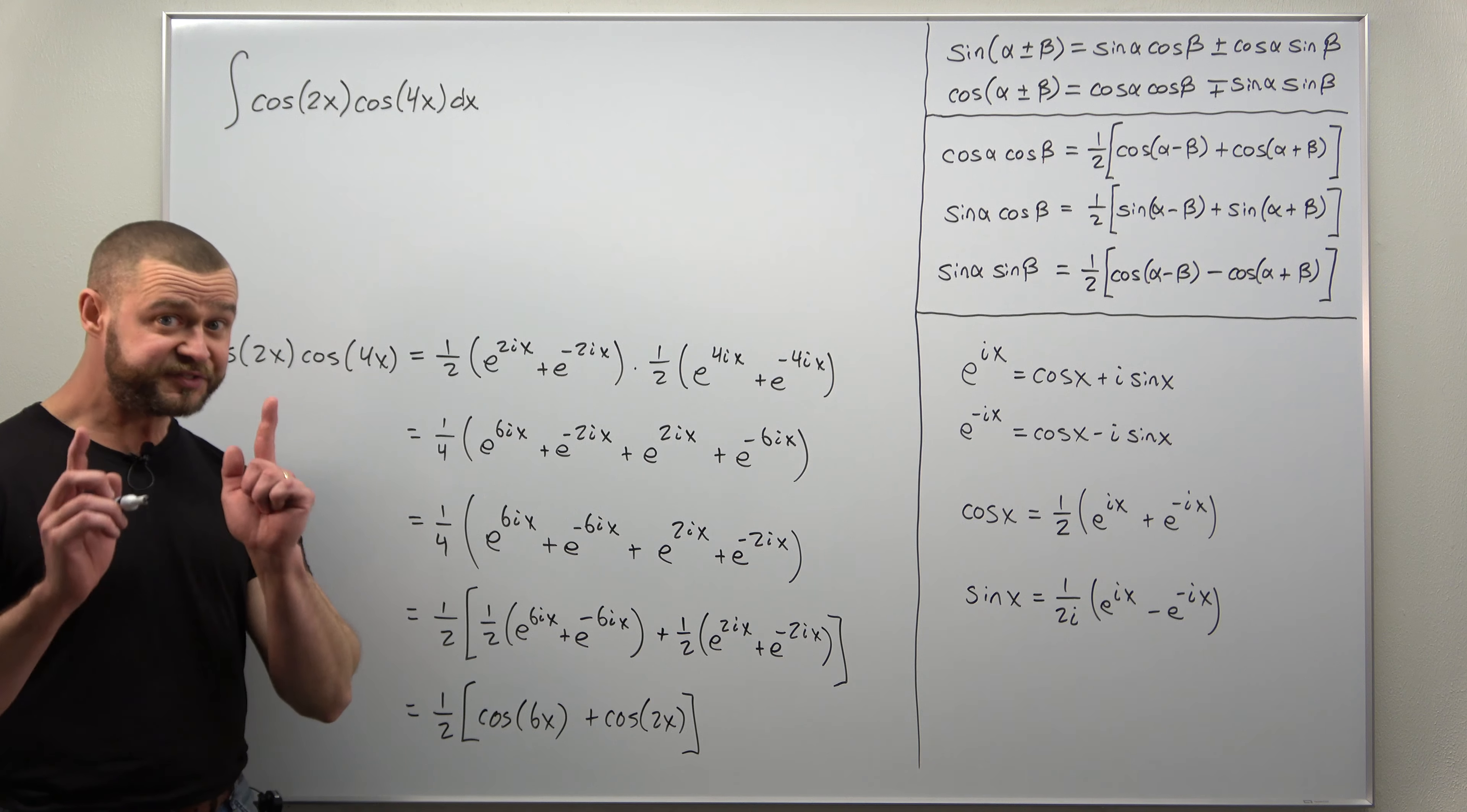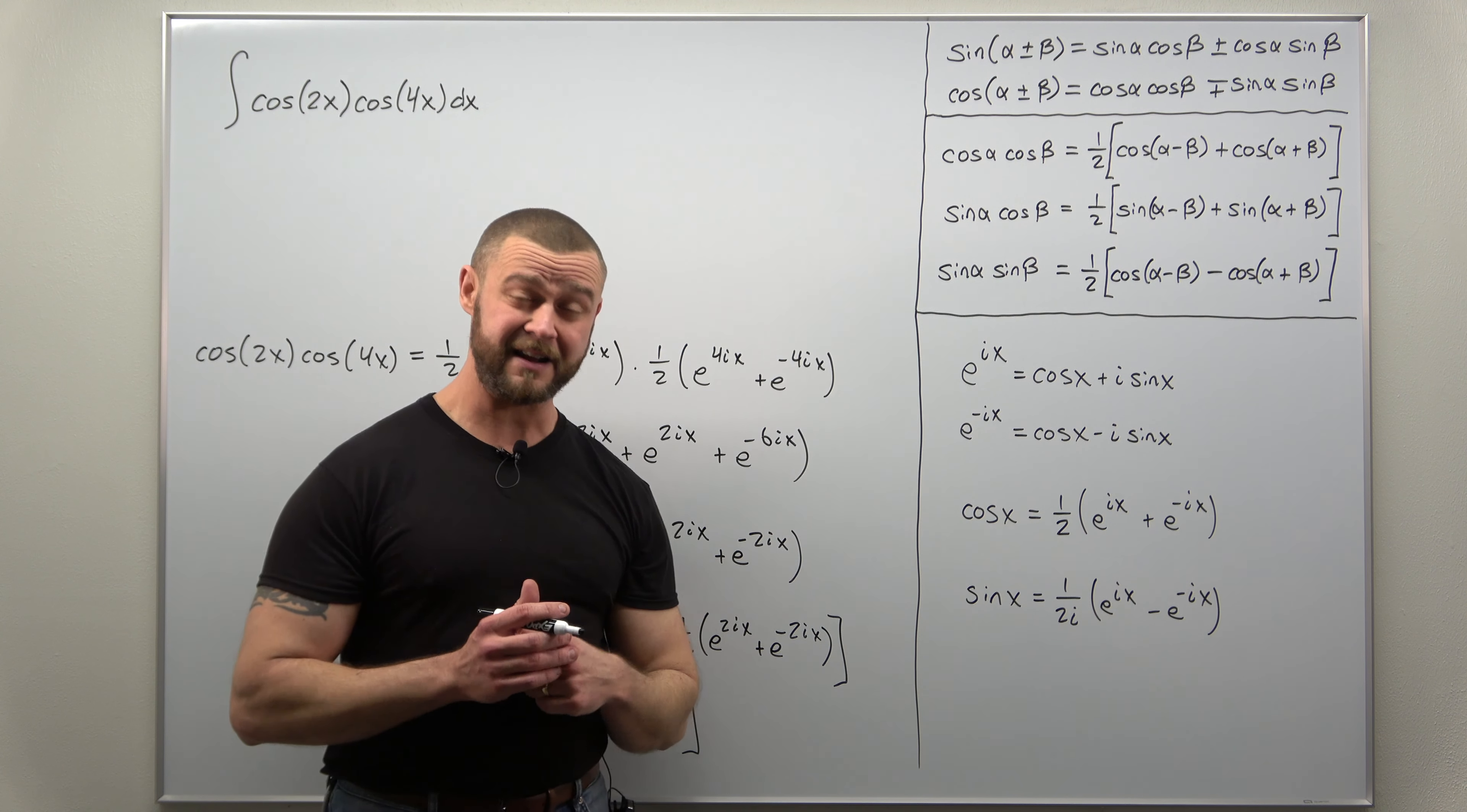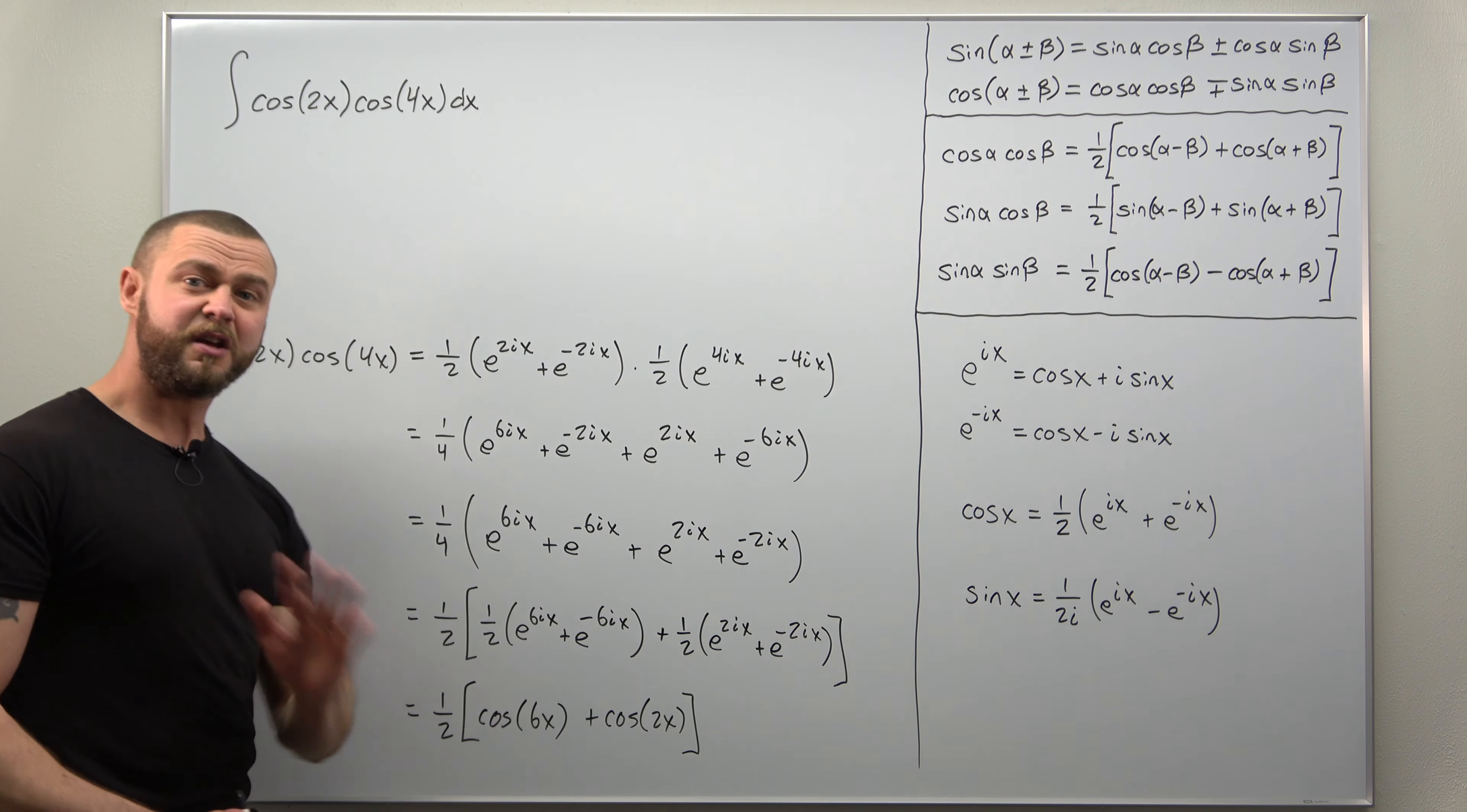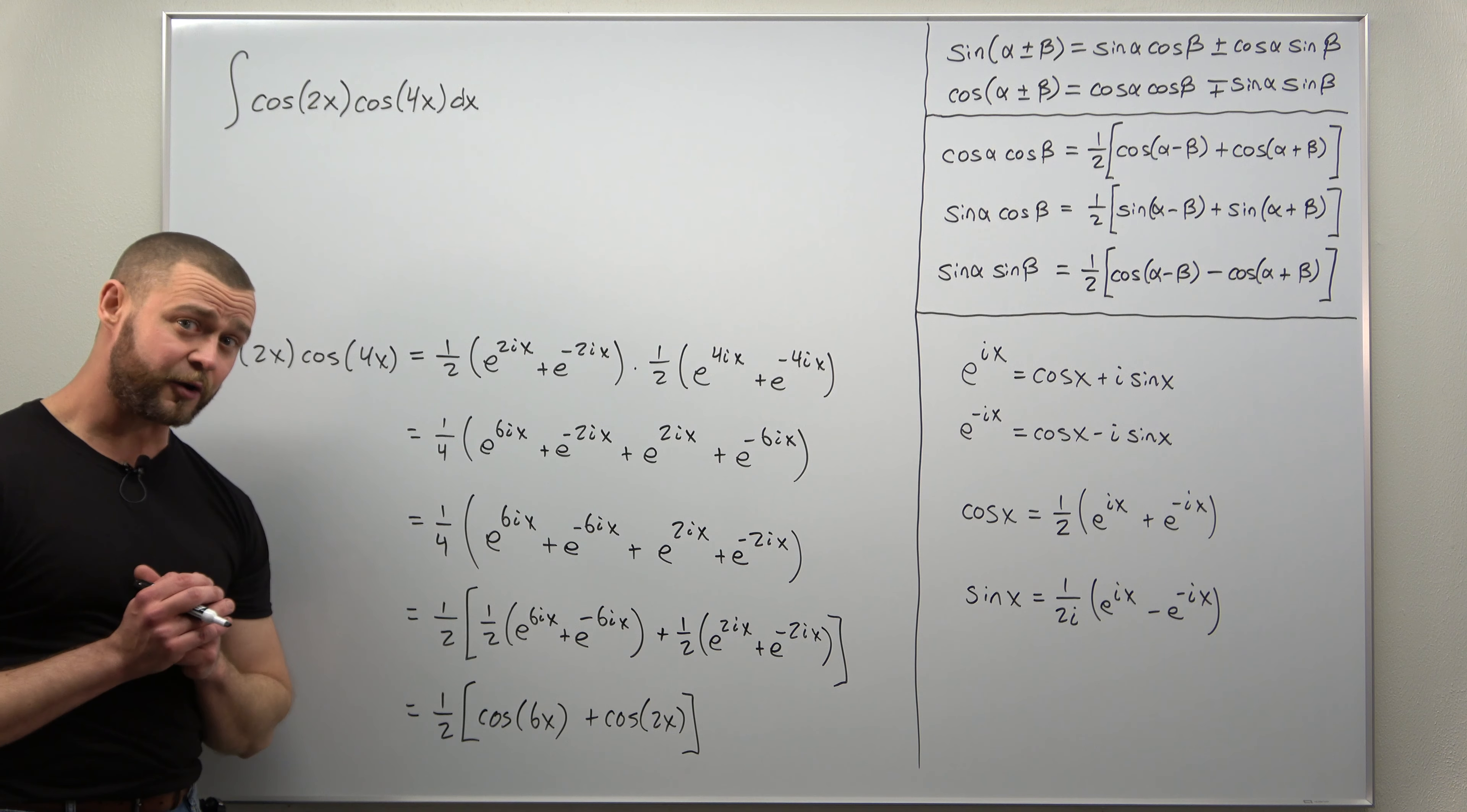That is the same end result of what you would get by applying the first cosine times cosine product to sum identity. But again, you have to memorize that formula. Instead of memorizing that formula, much easier to memorize these. They're a lot simpler, and with practice this work can go really quick. Keep in mind, the goal was to integrate, and now we have a result that's going to be very easy to integrate.